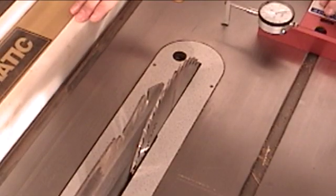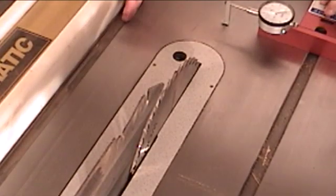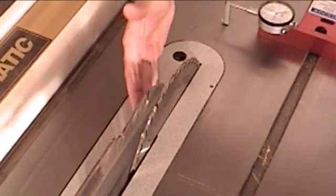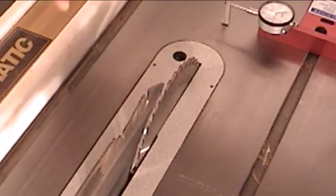Now because I know my fence is exactly parallel to my miter slot track and my miter slot track is exactly parallel to my blade, by default I know that my blade is exactly parallel with my table saw fence.